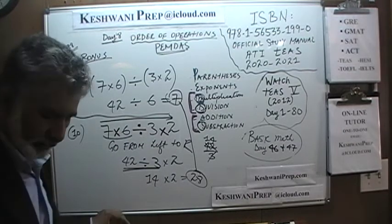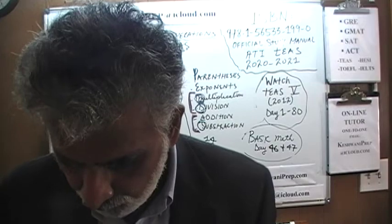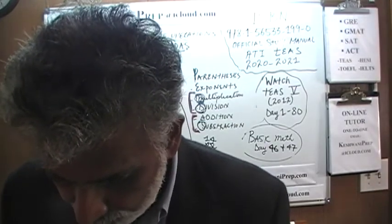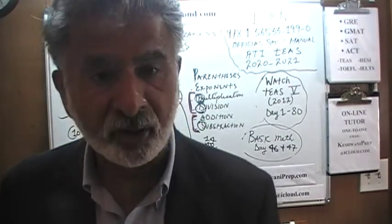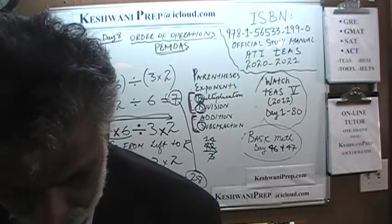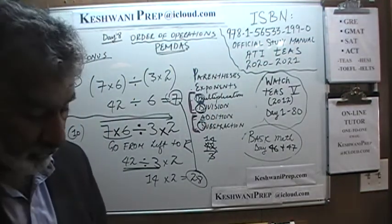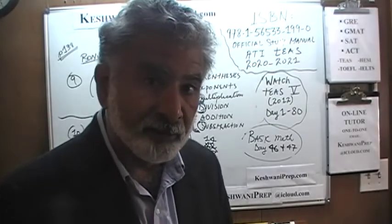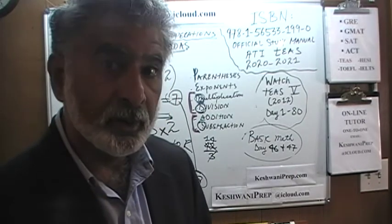And on that note, we will call it the end of this topic — the topic being order of operations. Next time when we meet, we are going to move on to the next chapter, chapter number 22, which talks about comparing numbers — what they like to call rational numbers. Why do they call them rational numbers? Because they want to sound sophisticated. Comparing numbers is just as fine, but if you want to sound sophisticated, you may call them comparing rational numbers. I will see you tomorrow. Bye now.